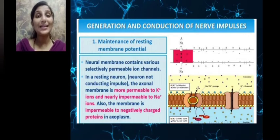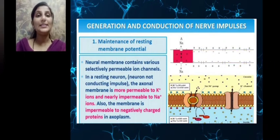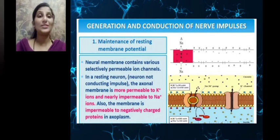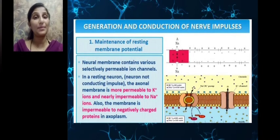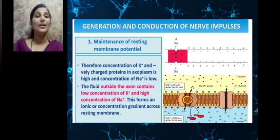When the neuron is at rest — that means it is not conducting any sort of impulse — the axon membrane is more permeable to K+ (potassium) ions. It is impermeable to sodium ions and also to negatively charged proteins present in the axoplasm. The cytoplasm of the axon is called the axoplasm.